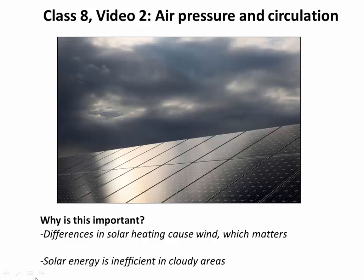Hello folks, welcome to the second video of class 8. In the first video we talked about solar heating as a function of latitude and how that affects how much solar electricity you might make at different places on earth. In this video we want to go one step further and think about how clouds are generated and how that might influence our ability to make solar electricity, through the lens of how air pressure arises and how that drives atmospheric circulation which generates clouds.